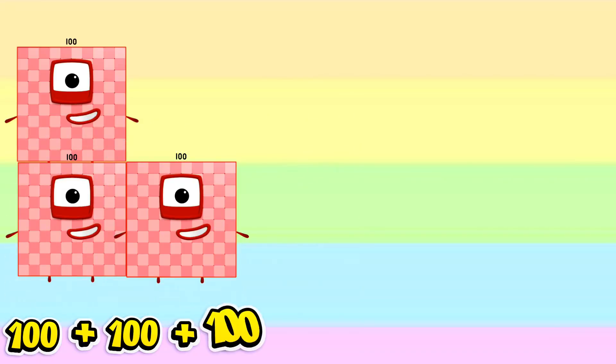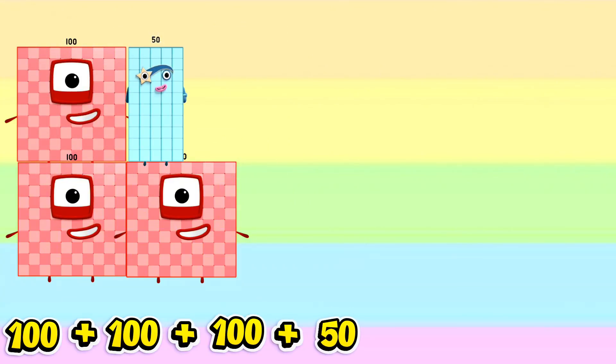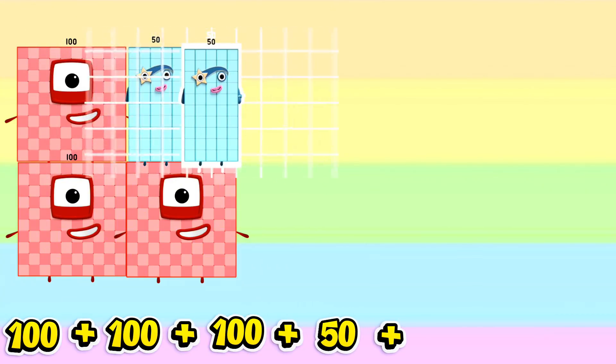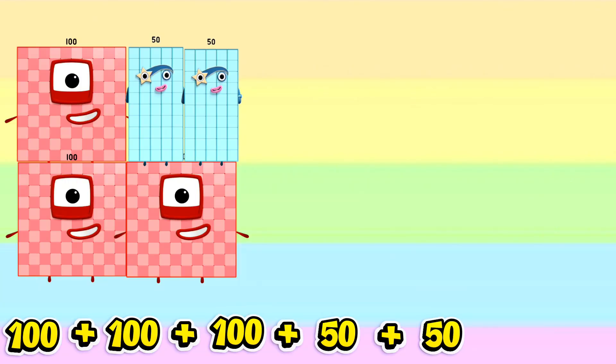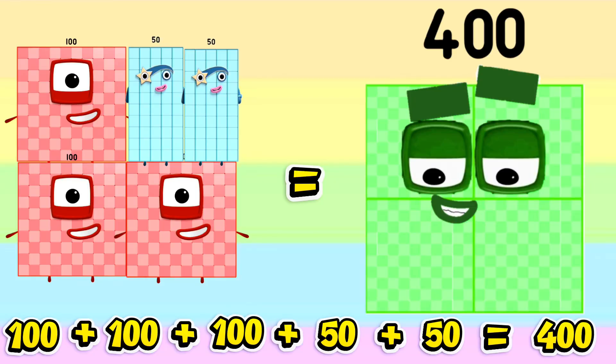256 plus 100 plus 100 plus 50 plus 50 is equals to 400.